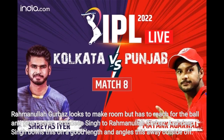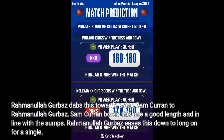Arsteep Singh to Ramanullah Gurbaz — bowls this on a good length and angles it away outside off. Gurbaz dabs this towards point. Sam Curran to Ramanullah Gurbaz — bowls this on a good length and in line with the stumps. Gurbaz eases this down to long on for a single.